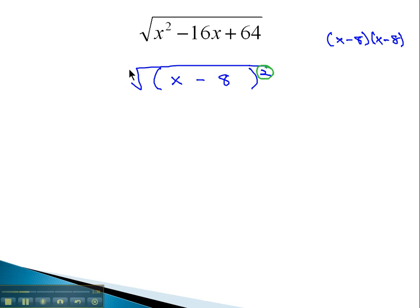We can now divide the exponent by the index of 2, pulling one x minus 8 out, leaving none behind. We have x minus 8 outside of the square root with nothing being left inside.